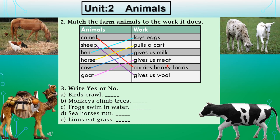Dear students, these are all the farm animals — also called useful animals. Some animals give us eggs, meat, and milk; some pull a cart or carry heavy loads; some give us wool. To summarize: camel carries heavy loads, sheep gives us wool, hen lays eggs, horse pulls a cart, cow gives us milk, goat gives us meat.